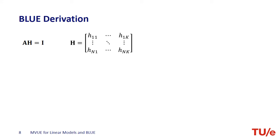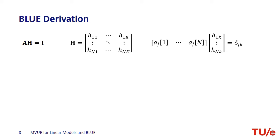The number of parameters K is much less than the number of samples N, meaning the observation matrix H is a long matrix whose number of rows is greater than its number of columns. Consider the kth column of H and how it is multiplied by the jth row of A. The condition A times H equals the identity matrix means the multiplication of the jth row of A with the kth column of H is zero, unless j equals k. If we consider only a single column, the number of row vectors a_j that satisfy the condition is infinite — there is no unique vector A satisfying this condition unless k equals N. That is why the condition of minimizing the variance is essential.